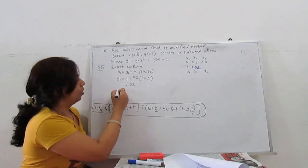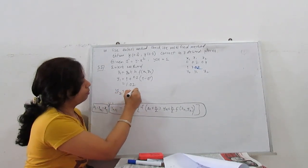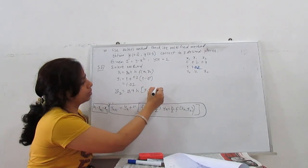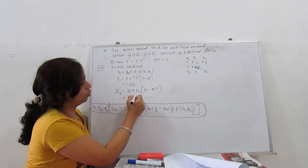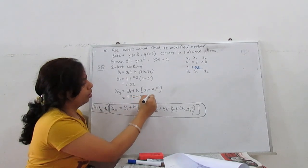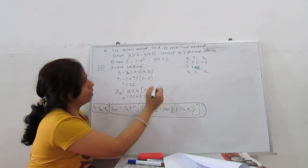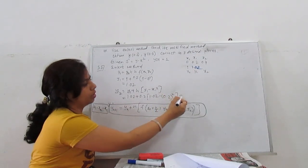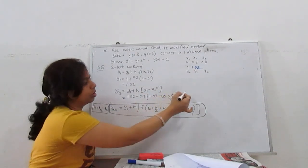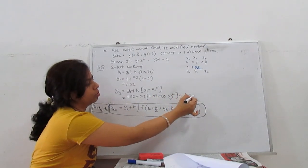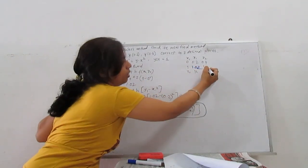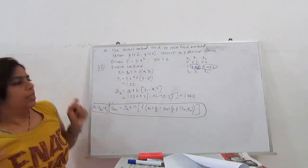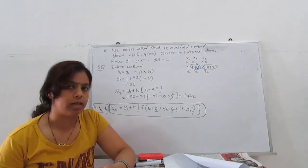Next, y2 = y1 + h·f(x1, y1) = 1.2 + 0.2·(y1 minus x1 squared). Substituting y1 = 1.2 and x1 = 0.2: y2 = 1.2 + 0.2·(1.2 minus 0.2 squared) = 1.2 + 0.2·(1.2 minus 0.04) = 1.2 + 0.2·(1.16). When calculated, y2 = 1.432. So at x = 0.4 by Euler's method, y is 1.432.